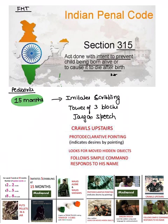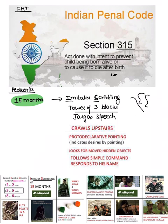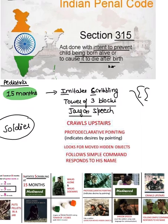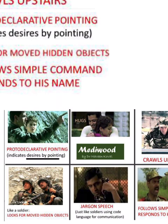Now, pediatric milestones at 15 months. A child at 15 months speaks four to six words, shows imitative scribbling, builds a tower of three blocks, and uses jargon speech. To remember these using a soldier mnemonic: the soldier indicates by pointing, hugs his family before leaving, crawls through difficult terrain, looks for a moved hidden object.